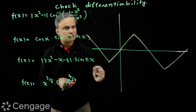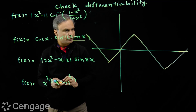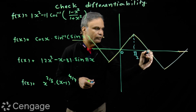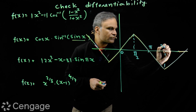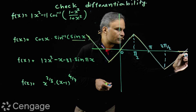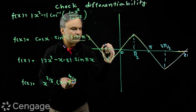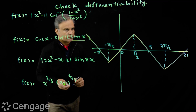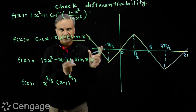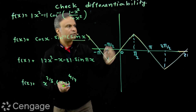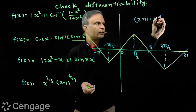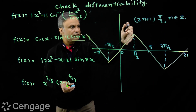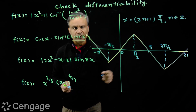The graph of sin⁻¹(sin x) has the x-axis marked at π/2, π, 3π/2, 2π, -π/2, -π, and so on. The function is non-differentiable at (2n+1)·π/2 where n belongs to the set of integers.